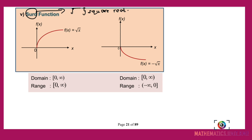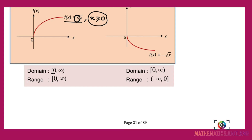For the first graph, f(x) equals √x, where x must be greater than or equal to 0, because under the square root we cannot have a negative number. The graph goes to the right and upward since there is no negative sign at the front. The domain is from 0 to infinity.